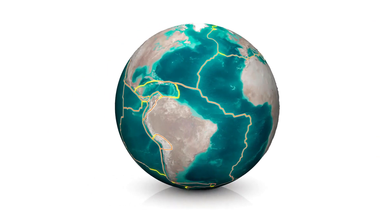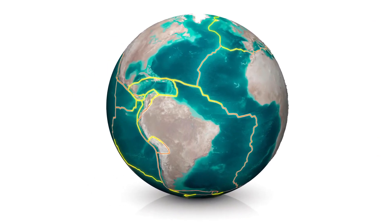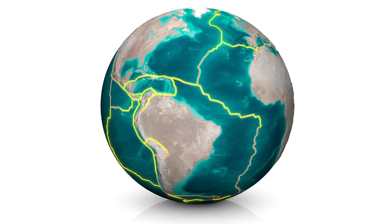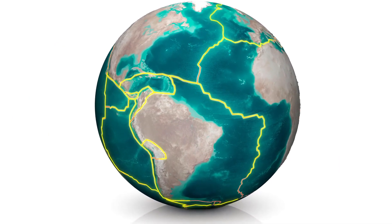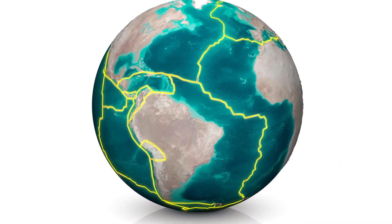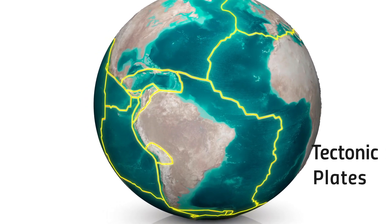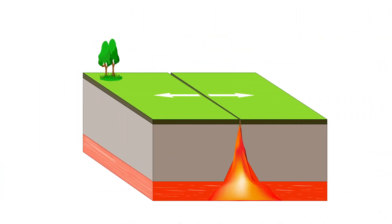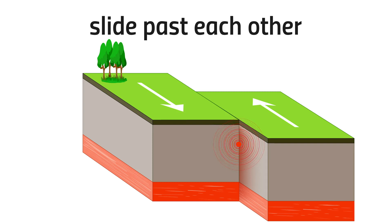Earth's surface is like a jigsaw puzzle with approximately 20 pieces that are constantly moving. These puzzle-like pieces are called tectonic plates. When these plates move, heat, or slide past each other,